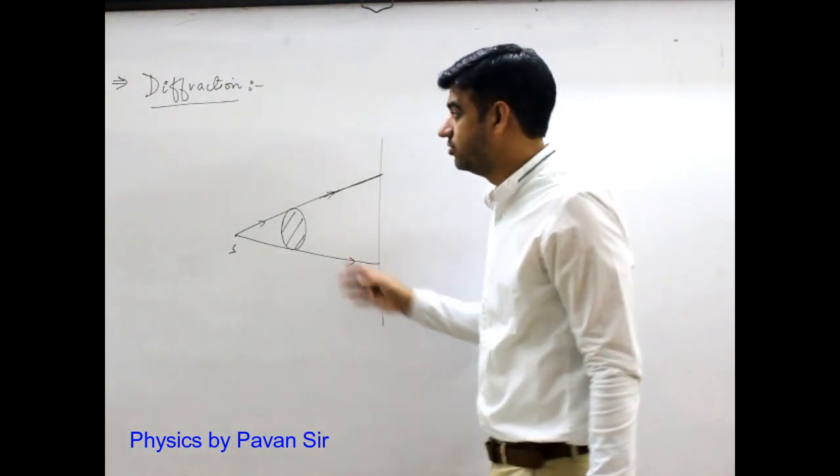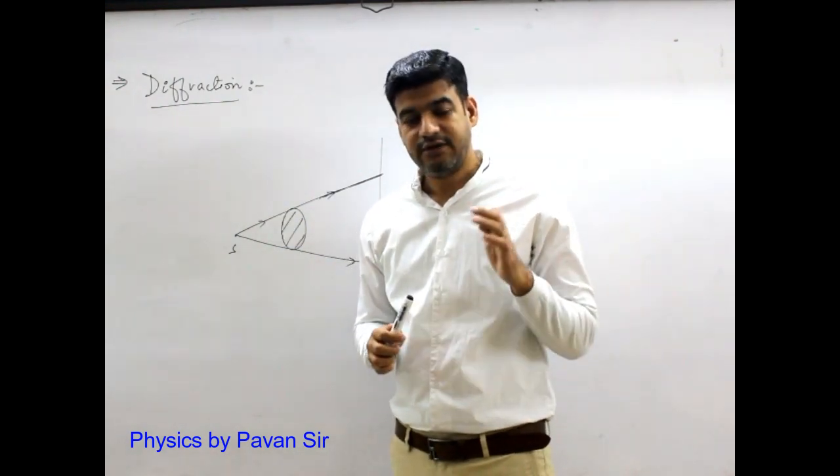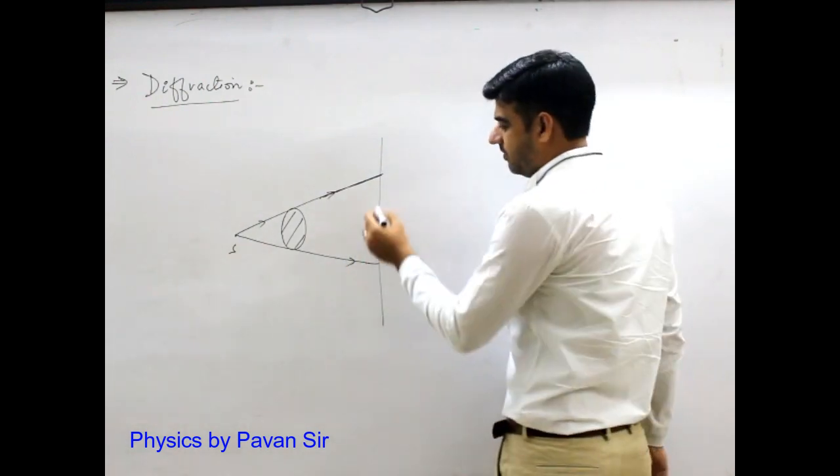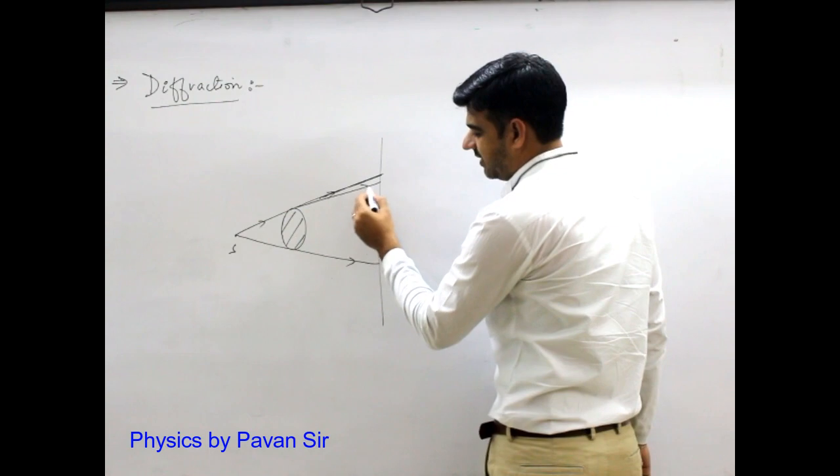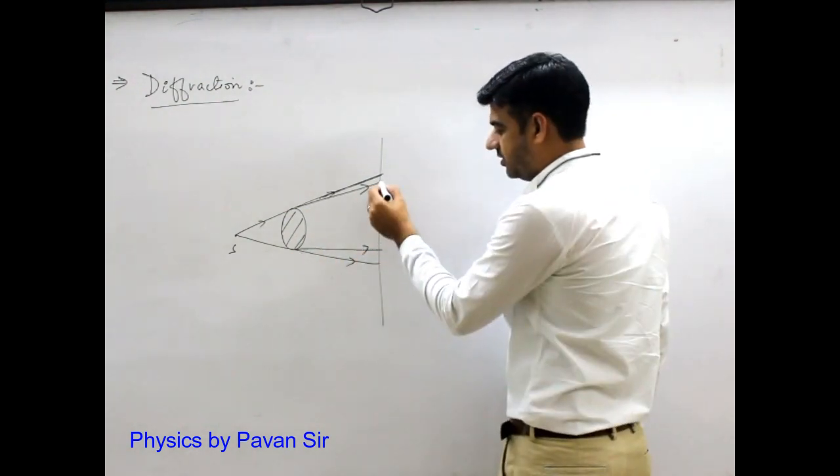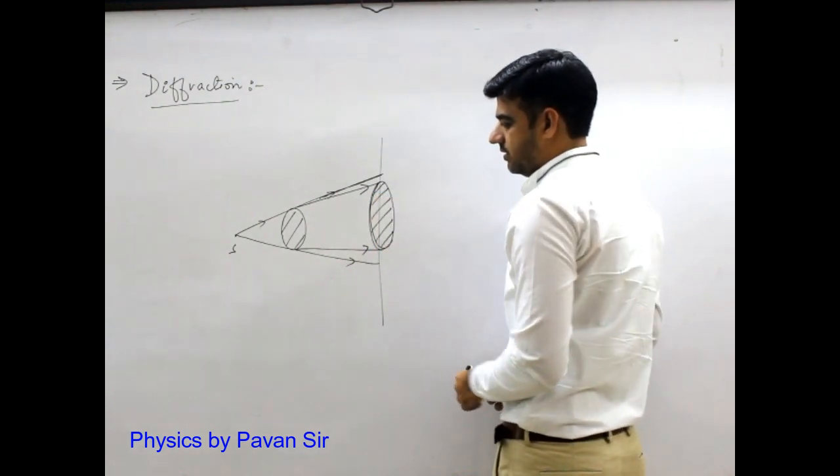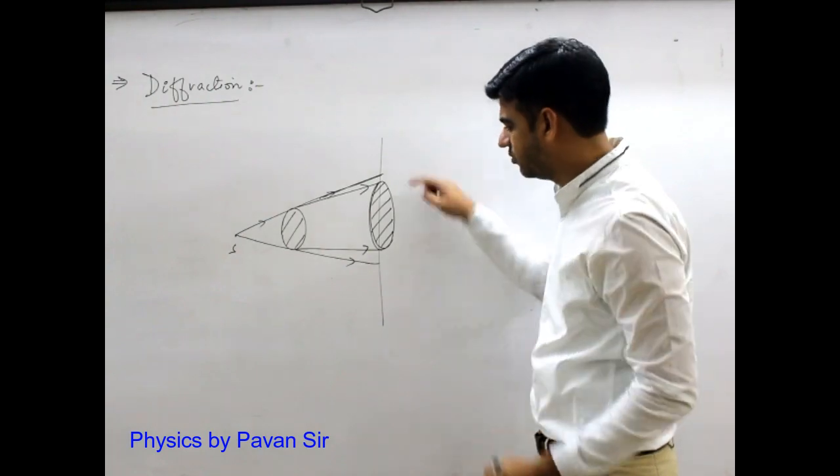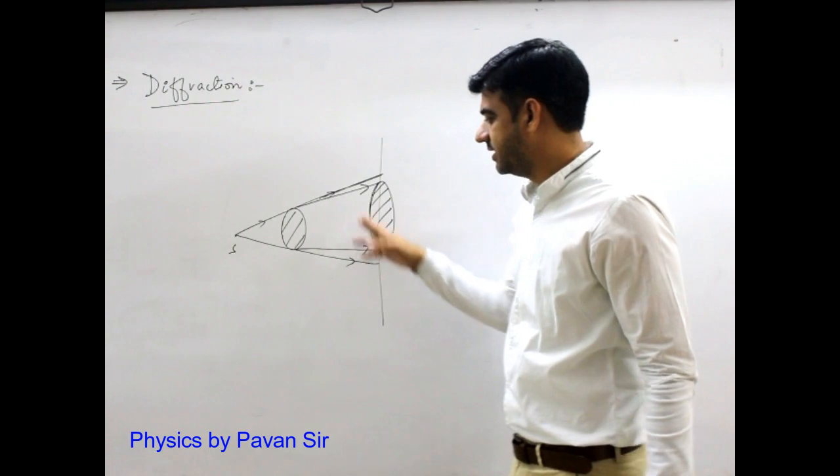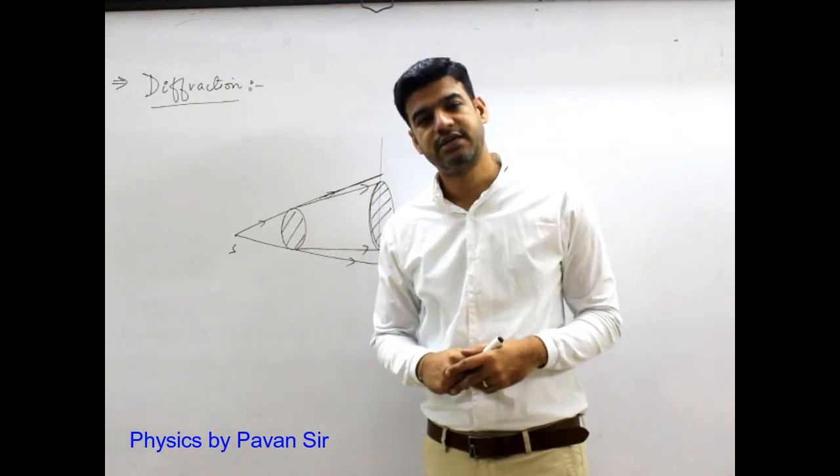But light is bent around the edges of the obstacle and goes into the shadow region. So the shadow will be smaller here. The light will enter into this shadow. And in this direction, we get less shadow. This shadow should be seen here. Here it will be a little brightness, and then here it will be complete light. So in this direction, the light will be bent on the edges, and then we get diffraction.